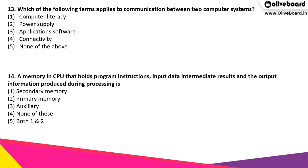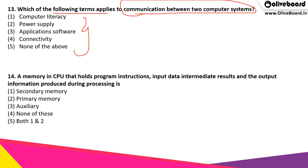Which of the following terms applies to communication between two computer systems? What is it that is applied to communication between two computer systems? The correct answer is option 4, connectivity.